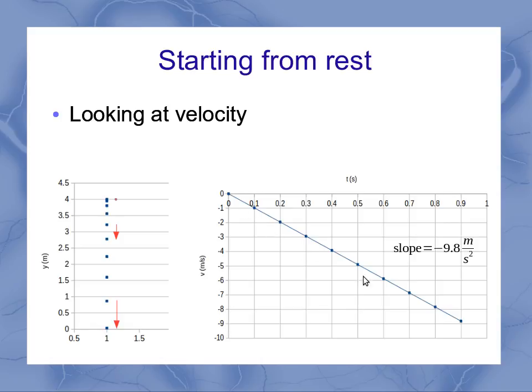The slope of this line is my minus 9.8 meters per second squared. That's my acceleration. And because it's a nice constant acceleration, we get a nice flat line for our velocity, where I've got the same slope everywhere, meaning I've got the same acceleration value everywhere.